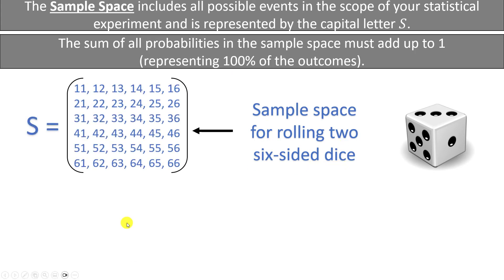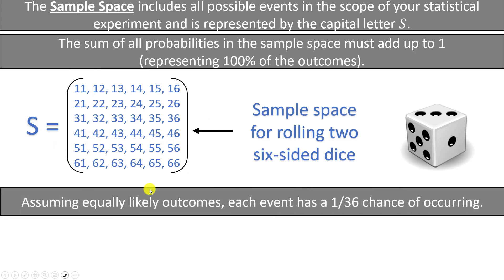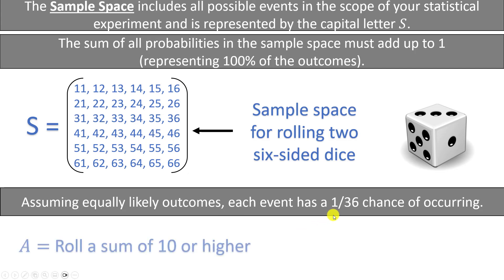Let's write out the sample space for rolling two six-sided dice. The pair (1,1) means you rolled a 1 on both dice; (1,2) means a 1 on the first die and a 2 on the second, and so on through all 36 different outcomes. Assuming equally likely outcomes — which is reasonable — each outcome has a 1/36 chance of occurring.